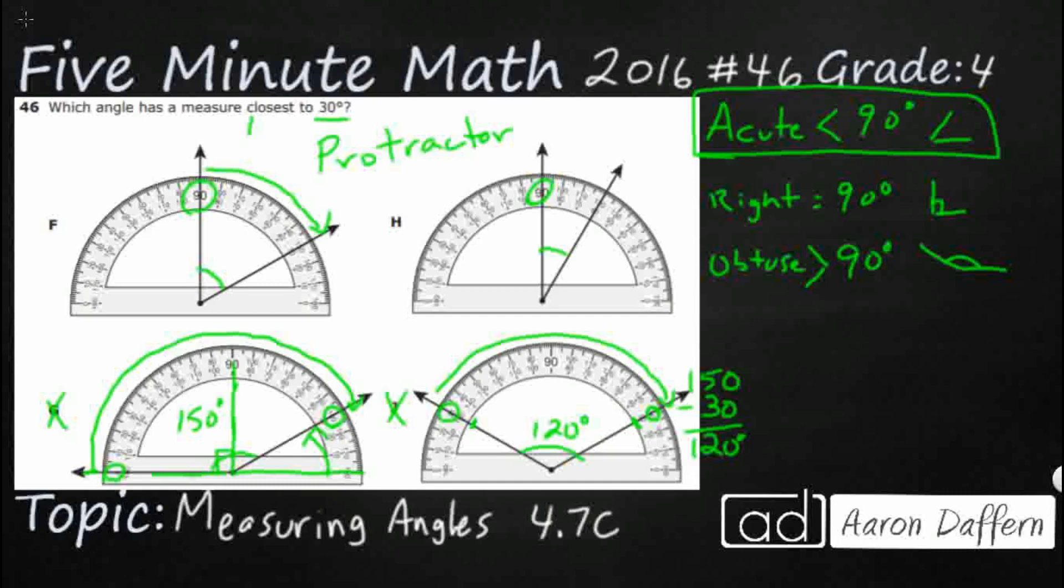So let's do 150 minus 90. And it's going to be close with 15 minus nine is six. So that's going to be a 60 degree angle. Once again, it's that 30 right there. And if we were to draw an angle from whatever's left to that next zero, that would be a good 30 degree angle.